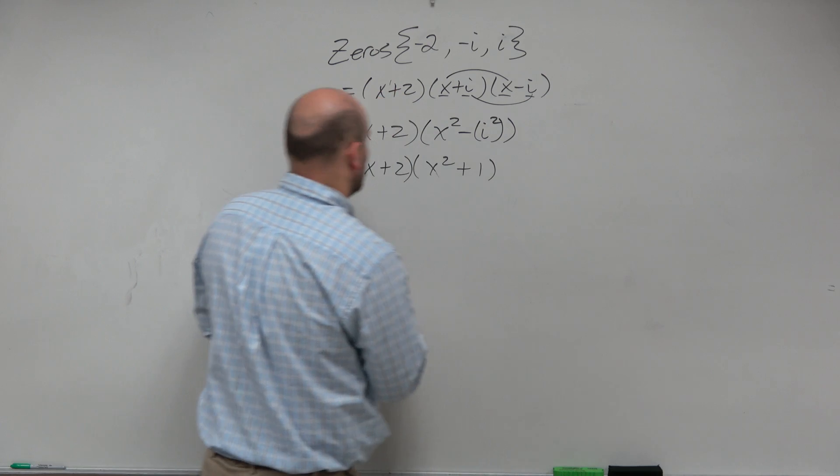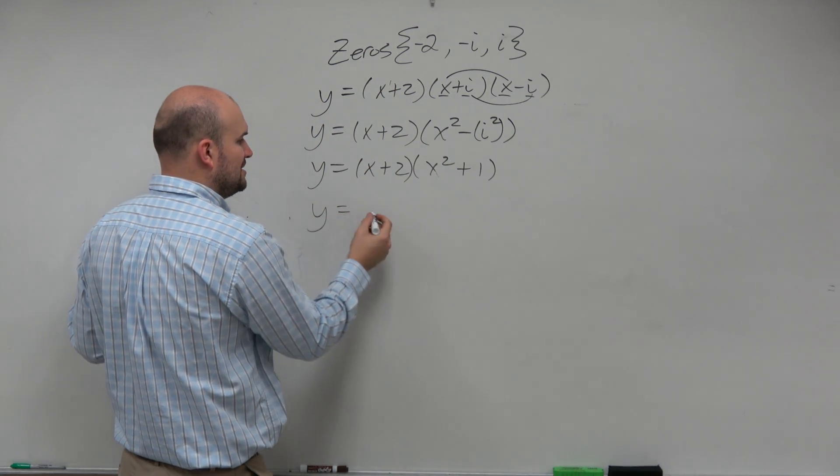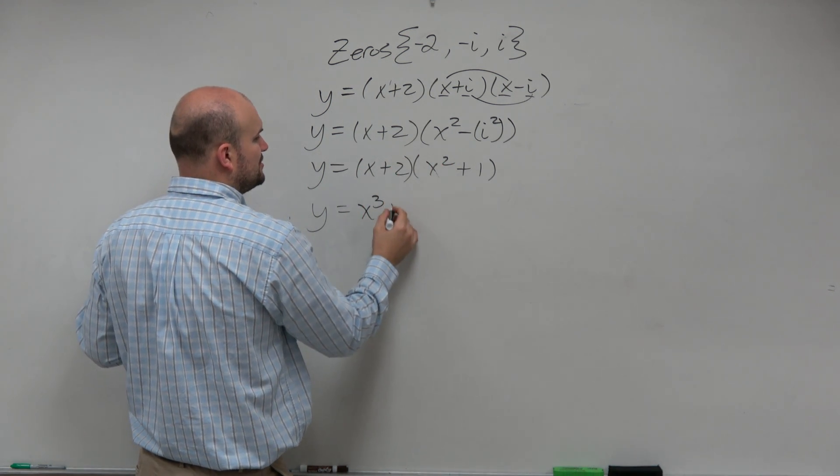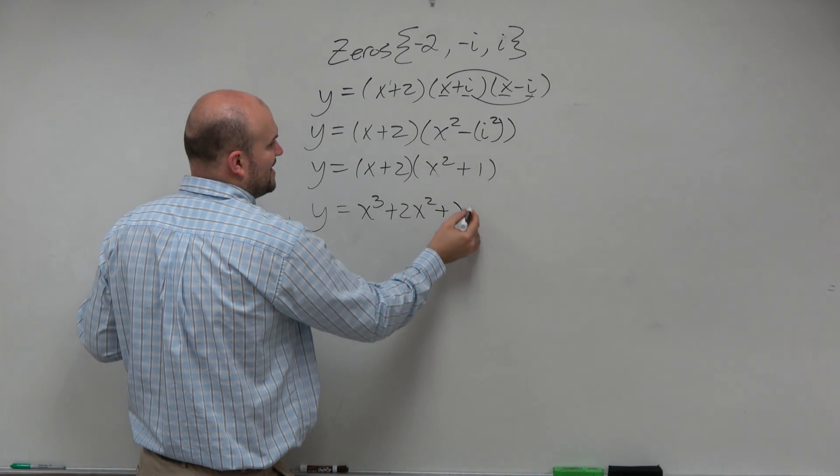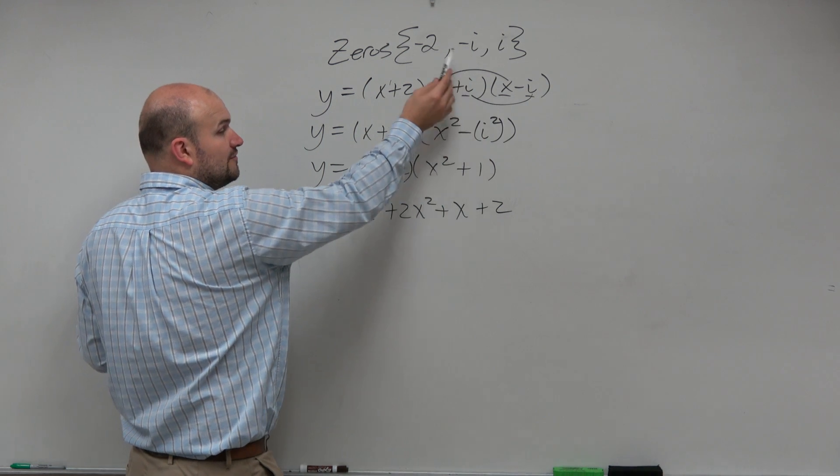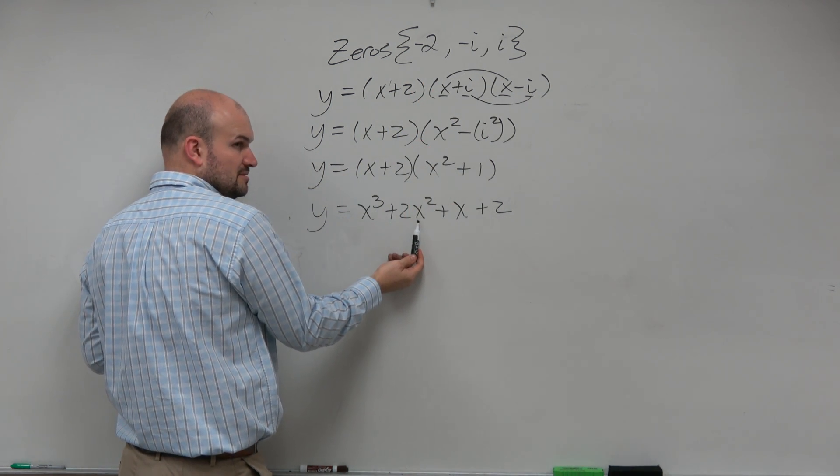Now the next step is now I just need to multiply this by FOIL, or distributed property, multiplying every term. So I'm just going to multiply this out. x squared times x is x cubed. x squared times 2 is positive 2x squared. x times 1 is positive x, and 2 times 1 is positive 2.